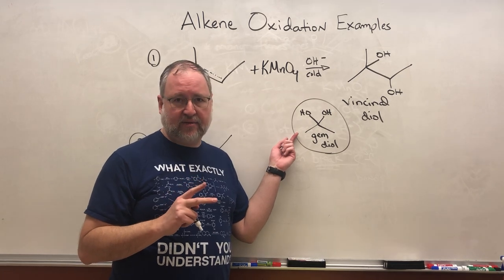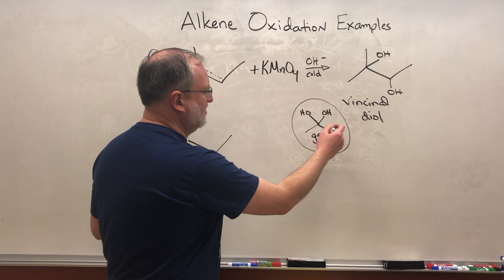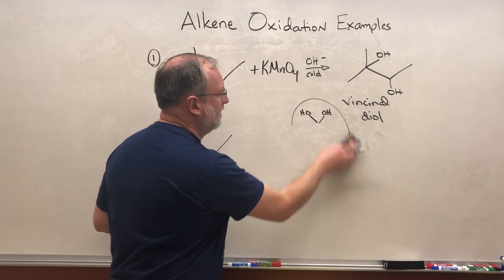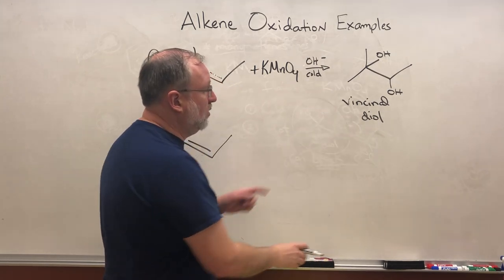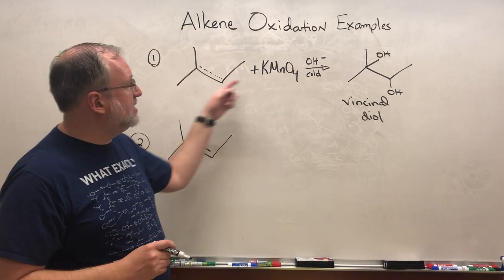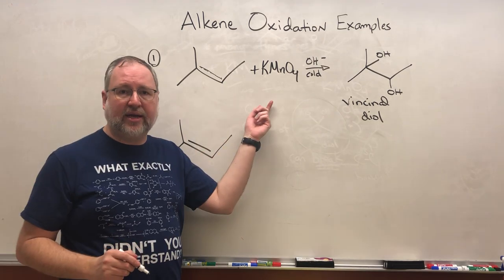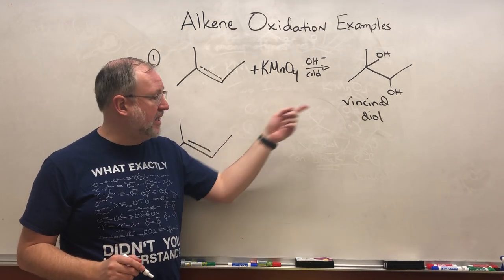If you see something like this in the context of alkene oxidation, you did it wrong. So no gem diols for us right now. We're only going to have vicinal diols. So this is what happens if you start with an alkene and you add cold potassium permanganate and base.